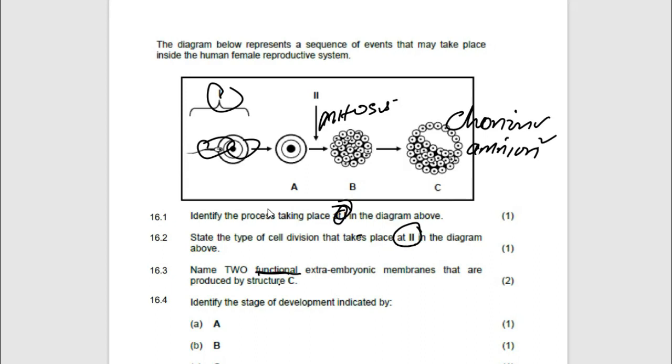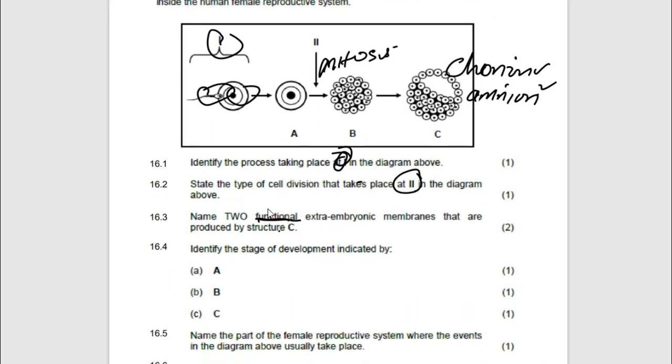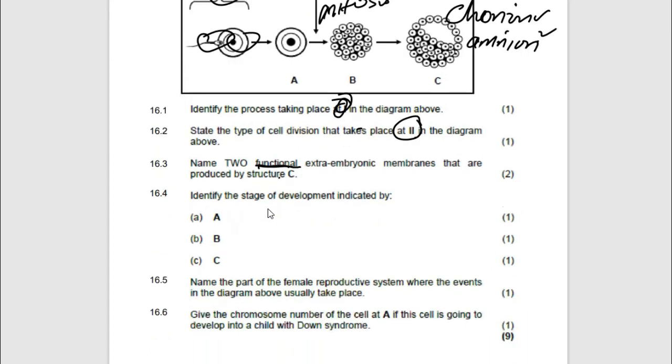Identify the stage of development indicated by A. What is happening there? That is a zygote. And then B, it is a morula. And then C, it's a hollow ball of cells which we call blastula or blastocyst. Make sure that you write the correct spelling.